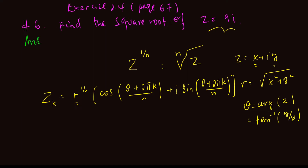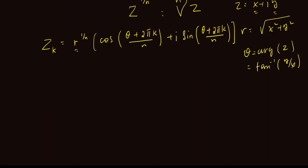So z is equal to 9i. This means the real part is 0 and the imaginary part is 9. So x is 0 and y is 9. Now when you interpret this formula,